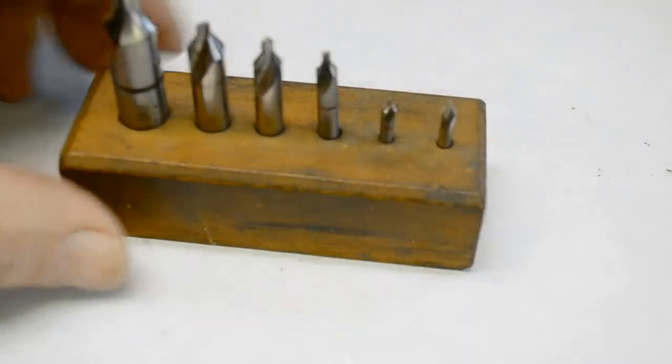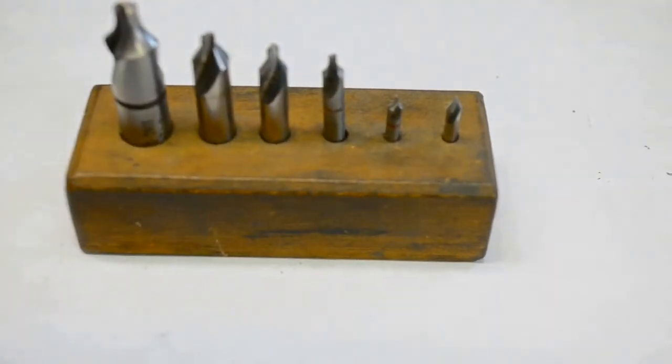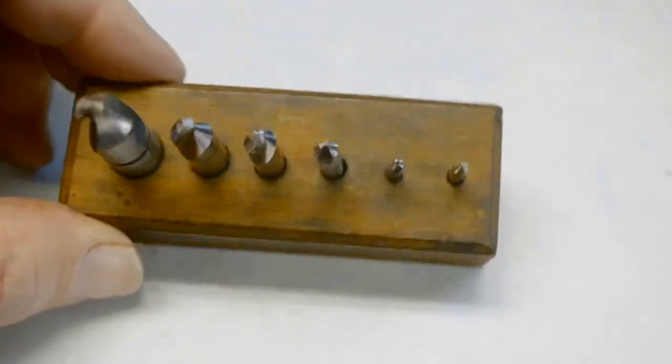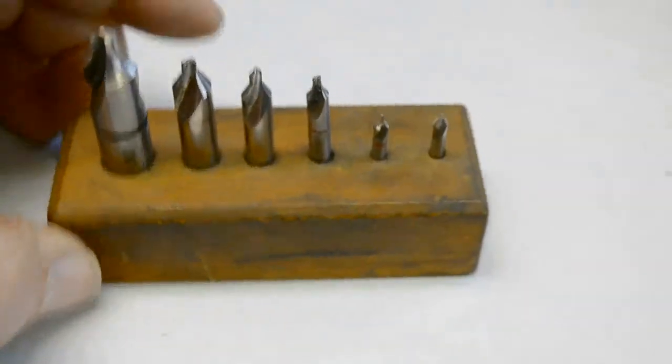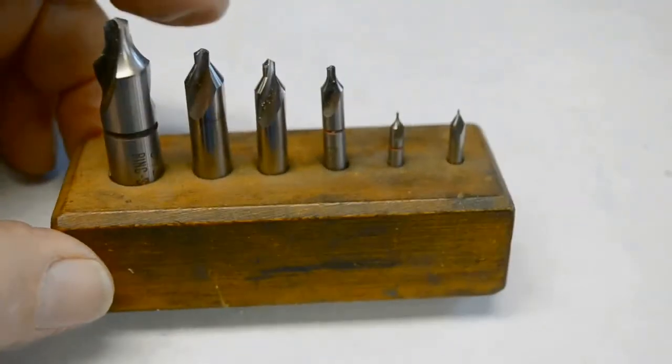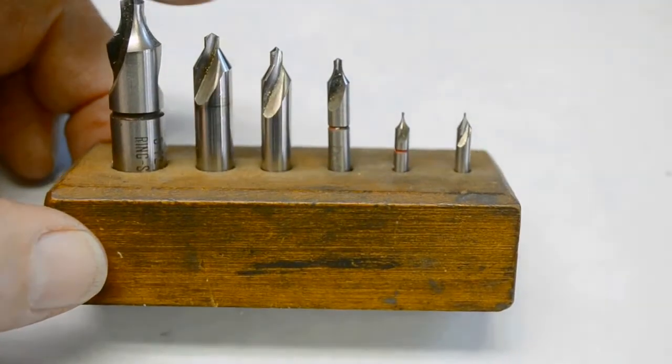And one thing that I thought I'd share with you is my little tooling block that I've made to hold my end mills and my center drills. It's just a little block of wood, drilled for each one. And that keeps them nice and neat on the shelf beside the milling machine, halfway between the milling machine and the lathe.